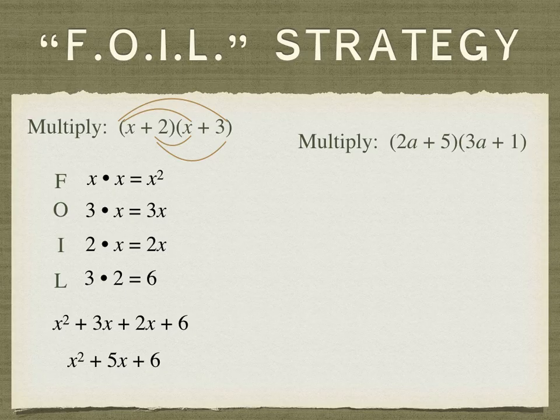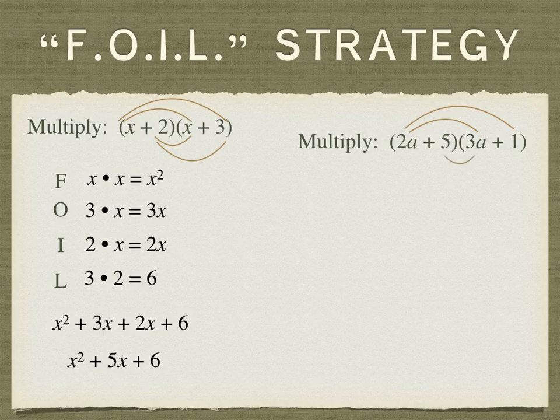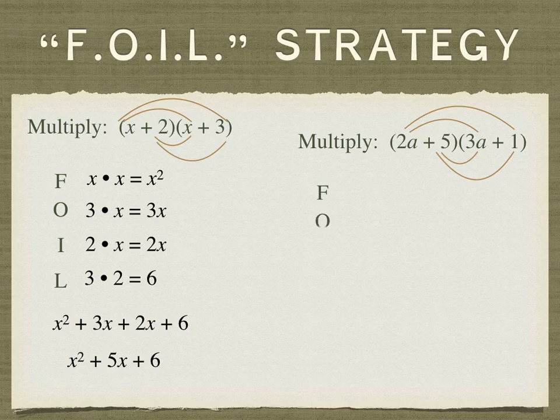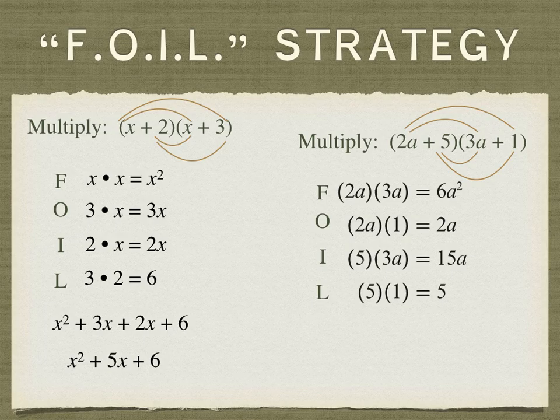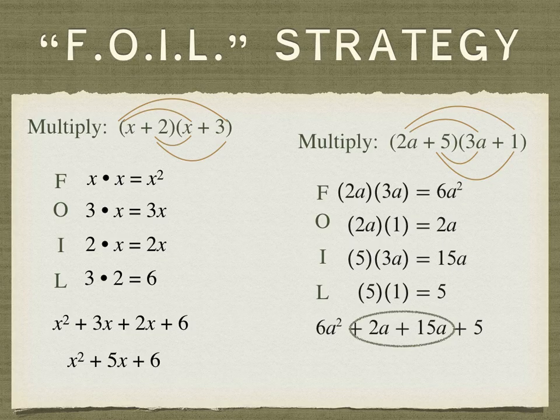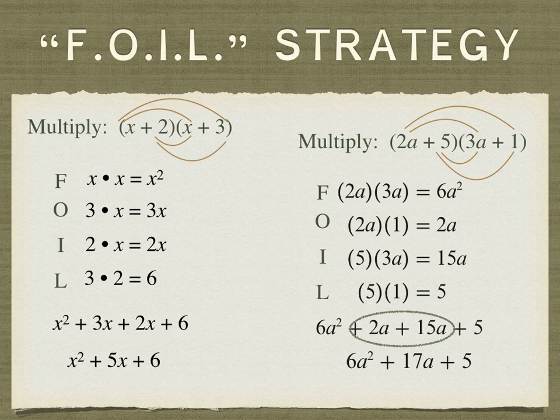So we can use FOIL in the other example as well. Those are the first, those are the outside two, the inside two terms we'll multiply them together, and the last two. And then we'll add the linear terms, the 2a and the 15a, and our product is 6a squared plus 17a plus 5.